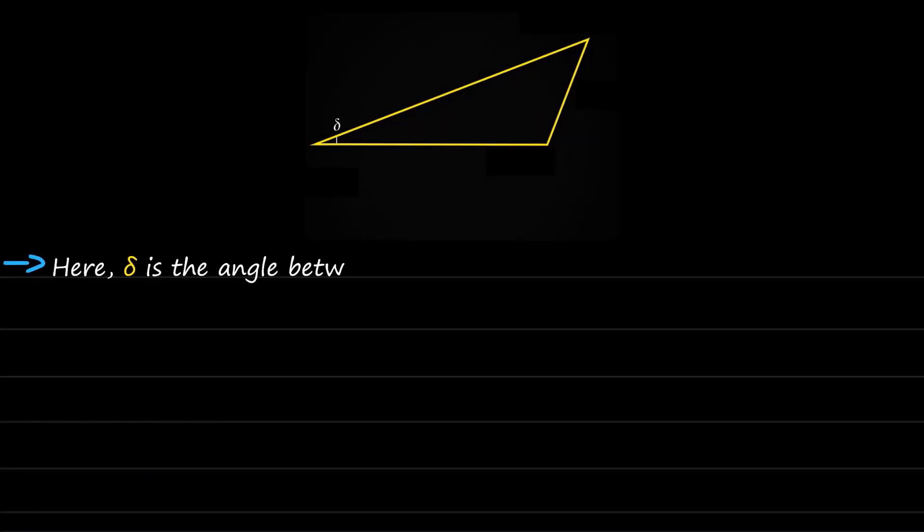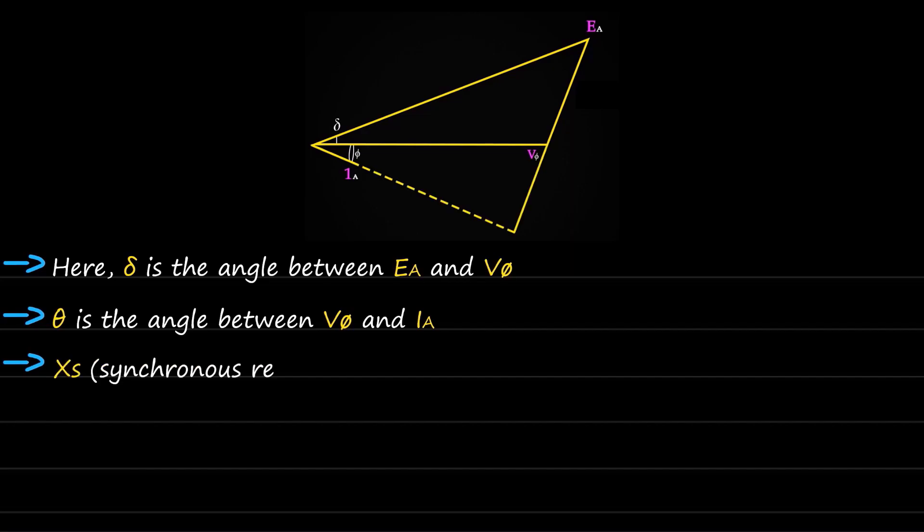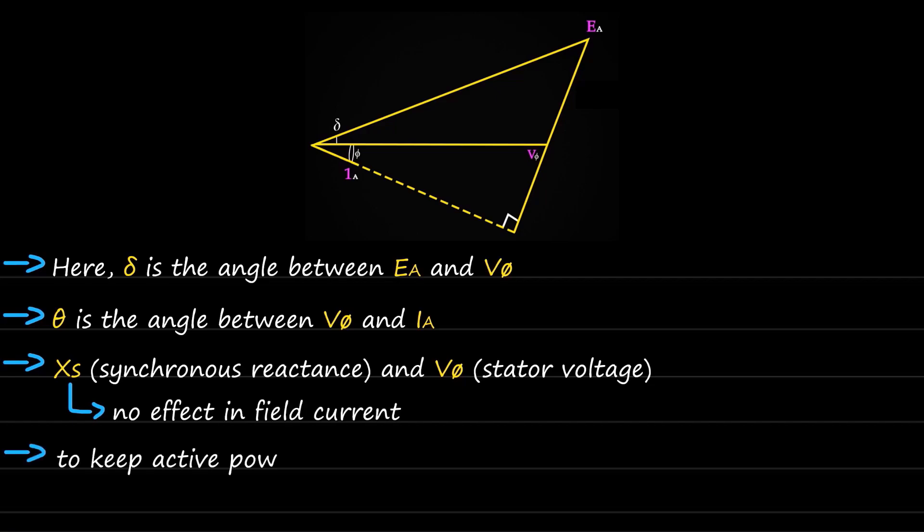Here, delta is the angle between Ea and V phi, and beta is the angle between V phi and Ia. While Xs synchronous reactance and V phi stator voltage have no effect with change in field current. From the equations, we can see that to keep active power constant, Ea sine delta and Ia cos theta should be kept constant.